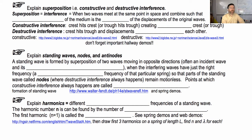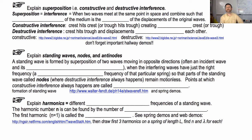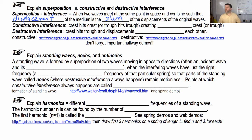Superposition, also called constructive and destructive interference, is the following: when two waves meet at the same point in space and combine, the displacement of the medium is the sum of the displacements of the original waves.